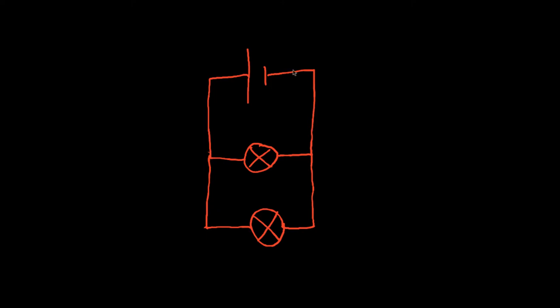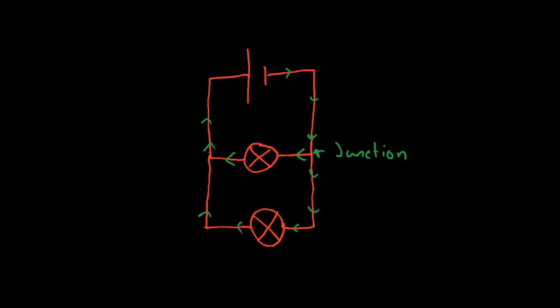What I mean by that is that electrons from the power supply are going to go through the wire, go through here. And if you have a look at this point here, this is what we call a junction. At that junction, electrons have a choice of where they go. They can either go this way through the bulb, out and then back, or at this junction they could carry on and go through the other bulb and go back. So what's really happened is your electrons have split — it's like a fork in the path and the electrons can decide which way to go.